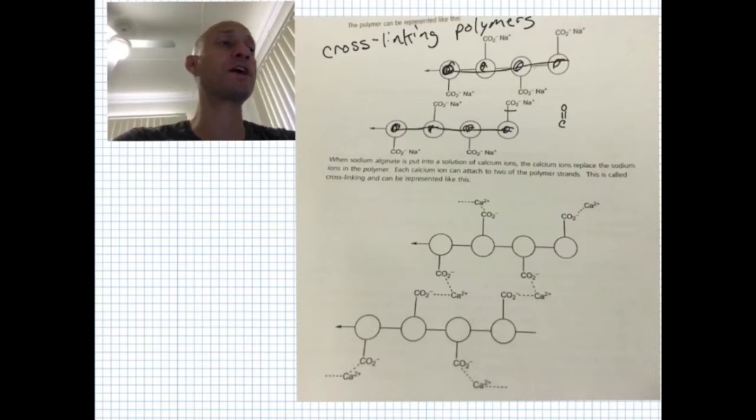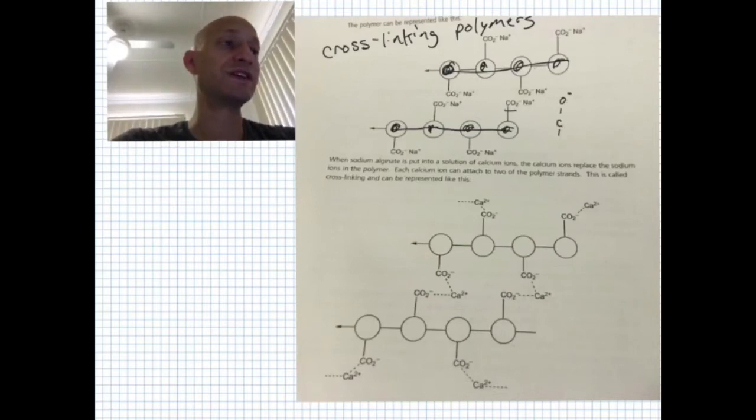These are represented as polymers, and these particular polymers have carboxylic acid functional groups on it. I'm just going to write this the correct way so that we can see. Here's the negative bond here, and then there is a double bond oxygen. In this case, the negative charge is going to be attracting sodium cations.